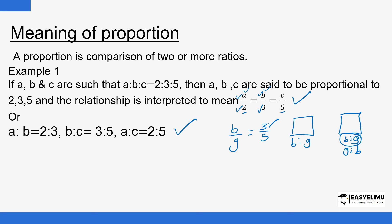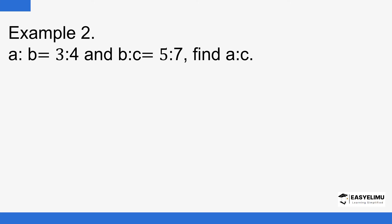Let's see Example 2. We have the ratio a:b = 3:4 and b:c = 5:7. Find the ratio a:c. We have a:b = 3:4 and b:c = 5:7. Notice the value of b is different in each ratio — here b corresponds to 4, and there b corresponds to 5. To solve this, we need to make both values of b the same, so we find the LCM, which is 20.